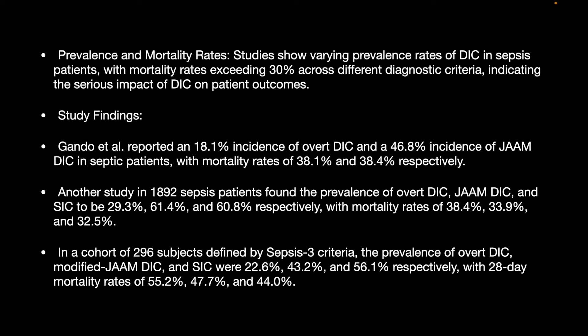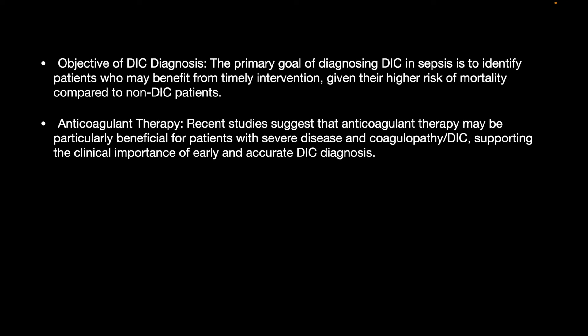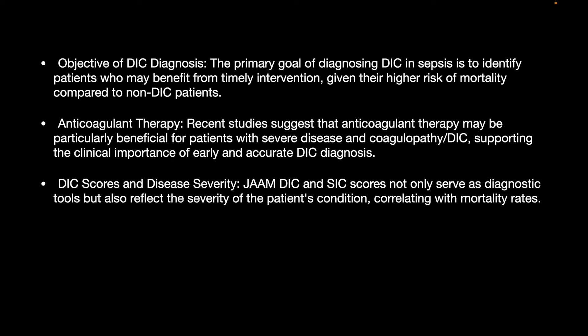In a cohort of 296 subjects defined by the Sepsis-3 criteria, the prevalence of overt DIC, modified JAM-DIC, and SIC were 22.6%, 43.2%, and 56.1% respectively, with 28-day mortality being 55.2%, 47.7%, and 44%. The primary goal of diagnosing DIC in sepsis is to identify patients who may benefit from timely intervention, given the higher risk of mortality compared to non-DIC patients. Recent studies suggest anticoagulation therapy may be particularly beneficial in patients with severe disease and coagulopathy, supporting the clinical utility of early and accurate DIC diagnosis.